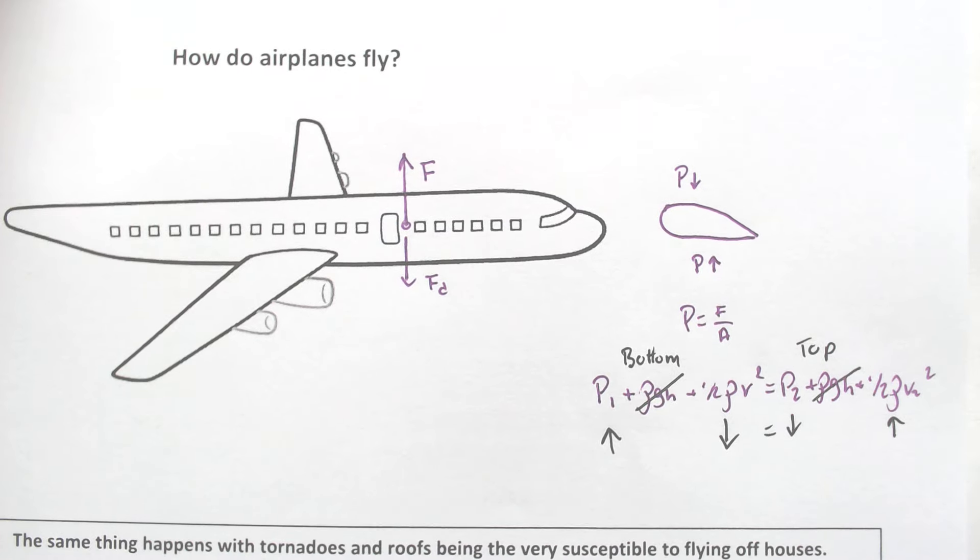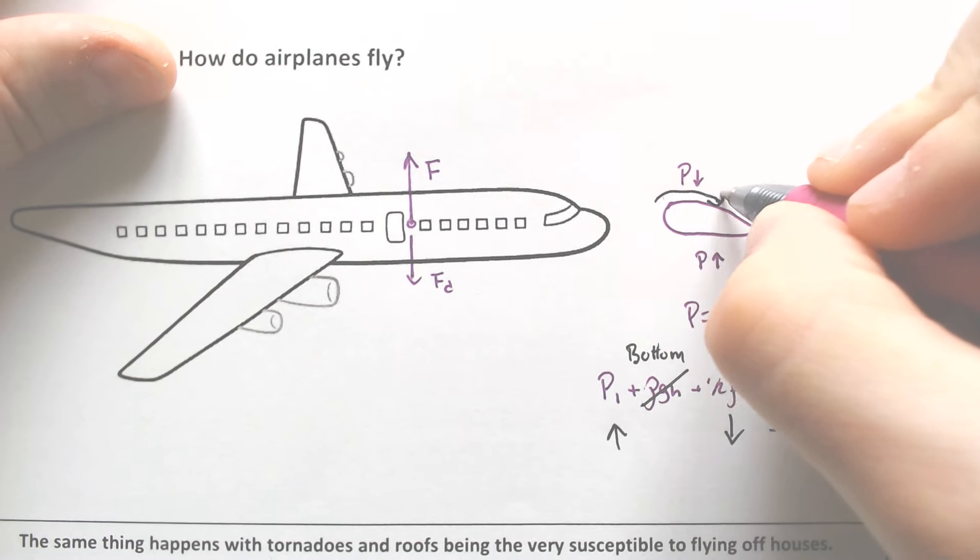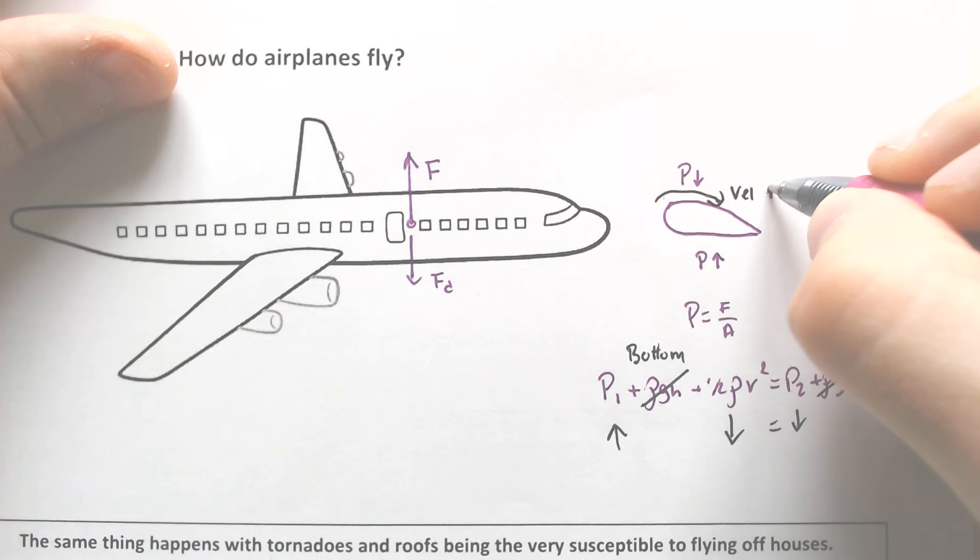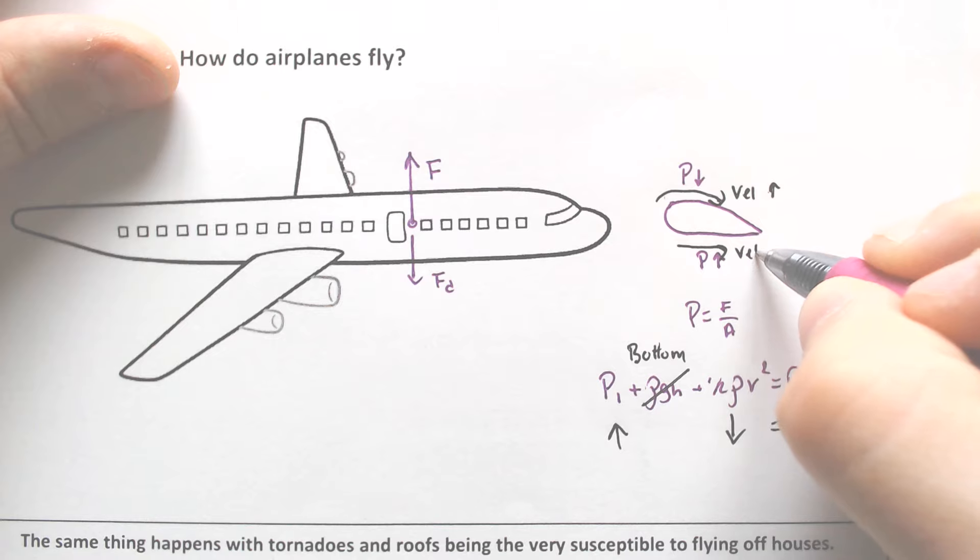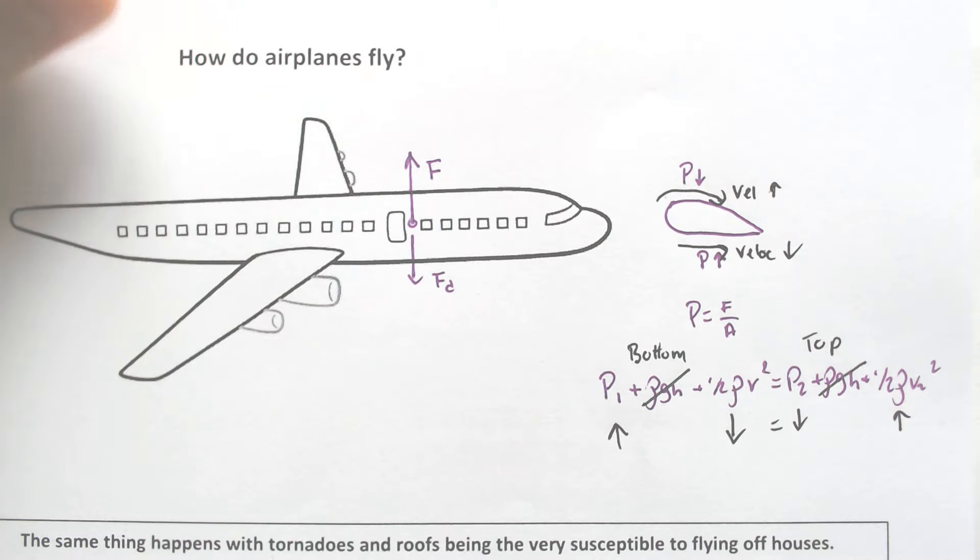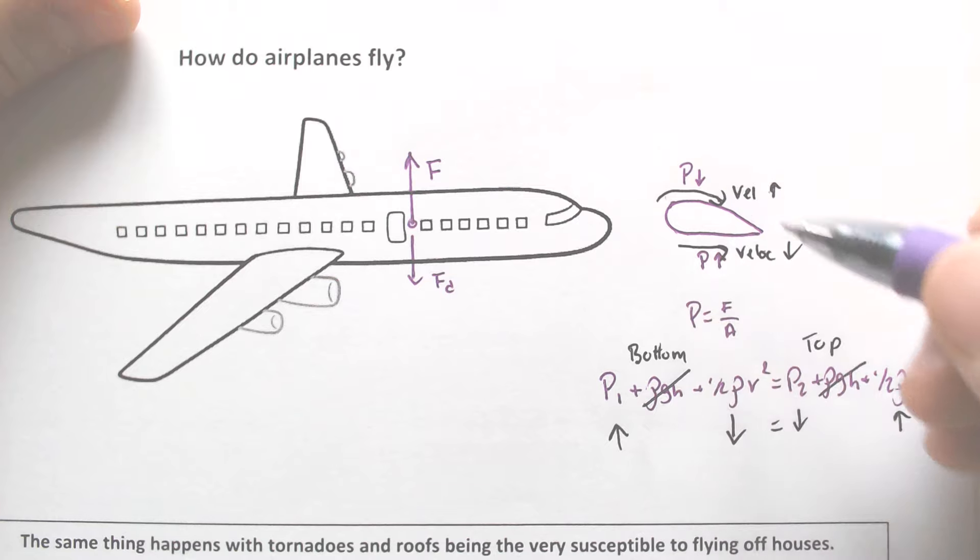So that means in order for an airplane to fly, the velocity of the air has to be more on the top than on the bottom. The velocity here would have to be smaller. And the way they accomplish this is actually through this curvature of the wing.